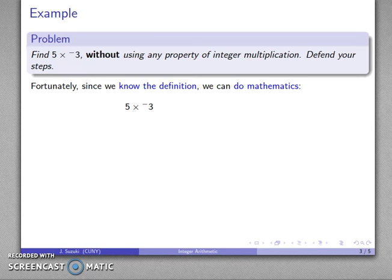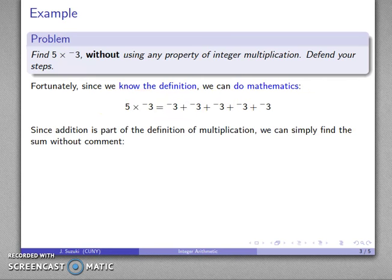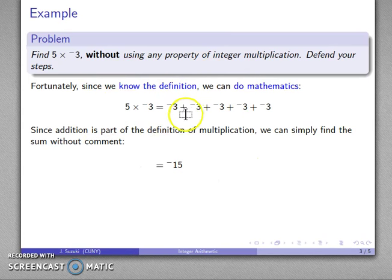So, 5 times negative 3 — my definition of multiplication says this is 5 copies of negative 3 added together. So 5 times negative 3 looks like this. My addition is part of my definition of multiplication, so I can find the sum without comment. The right-hand side is what I get when I add a whole bunch of negative 3s together — that's going to be negative 15. This problem we solve by writing that 5 times negative 3 is this sum, which equals negative 15, from our definition of multiplication.